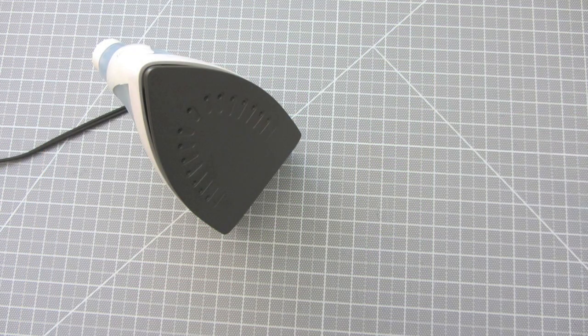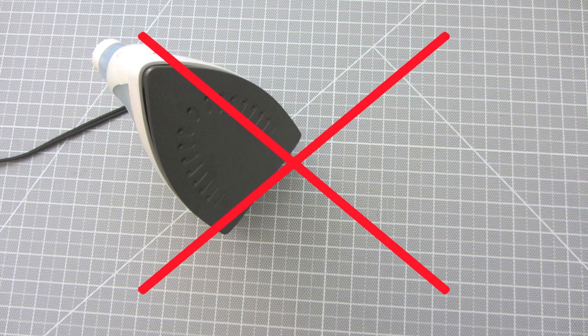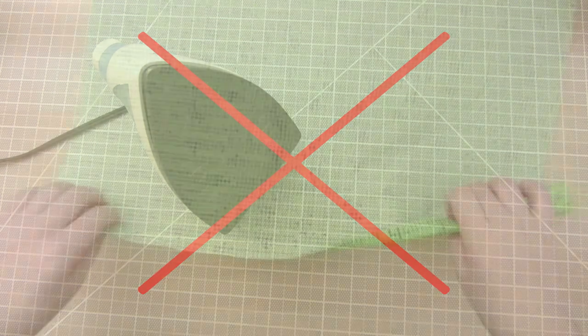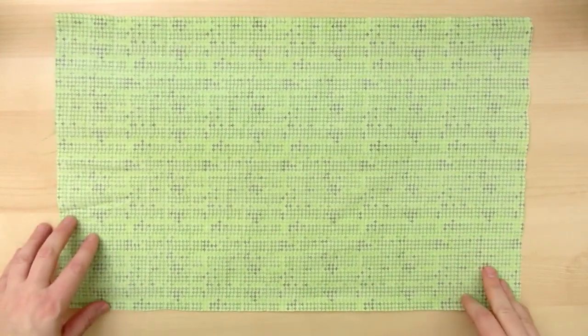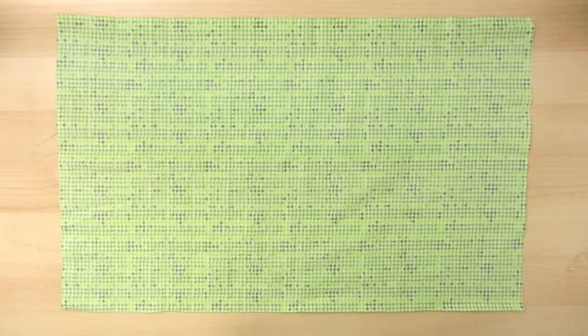First off, don't do this method on your cutting mat. The heat from the iron will ruin your cutting mat. Start with fabric that is fairly wrinkle-free. Iron it flat if you need to.